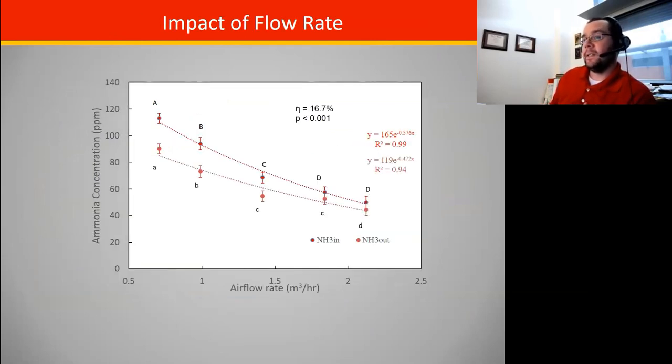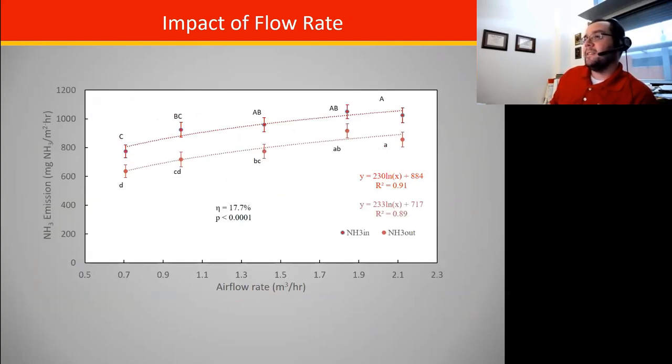We did play around with ventilation rates, and at lower ventilation rates where we had higher ammonia concentrations coming in, just like you'd expect that trickling filter had a greater percent removal. With higher airflow rates and lower concentrations coming into that system, we still did see significant reductions, but the reductions weren't as high. Overall though, it seemed to remove a relatively consistent amount of the ammonia. The percentage of ammonia that we were removing was somewhere around 18% of the incoming airstream.